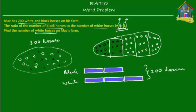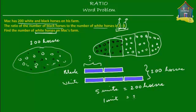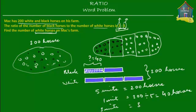So if there are 5 sets or 5 units and a total of 200 horses, then 5 units equals 200 horses, so 1 unit equals 200 divided by 5, which is 40 horses. So this one unit equals 40 horses. The white horses are 3 units, so 3 units equals 3 times 40, which is 120 horses — exactly what we found using the first method. So there are 120 white horses.